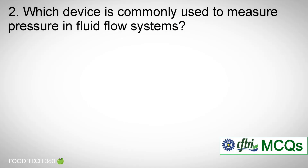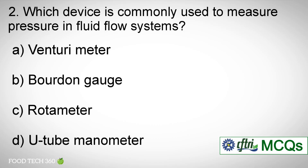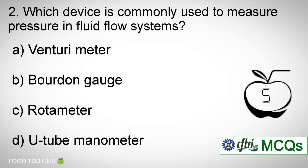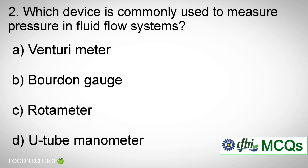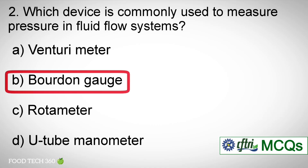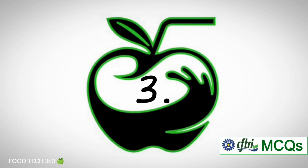Question number 2: Which device is commonly used to measure pressure in fluid flow systems? A. Venturimeter. B. Bourdon gauge. C. Rotameter. D. U-tube manometer. Correct answer: B — Bourdon gauge.